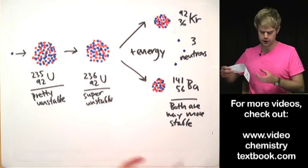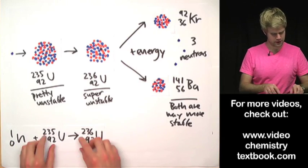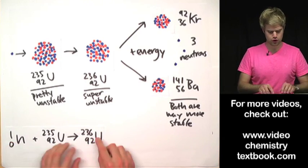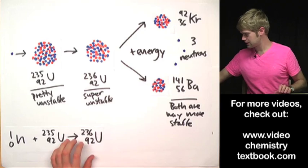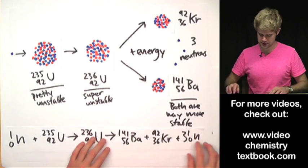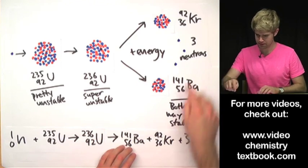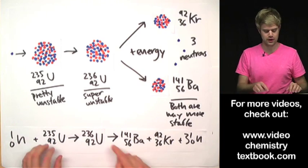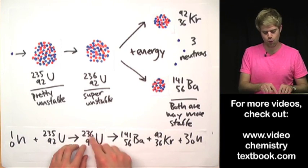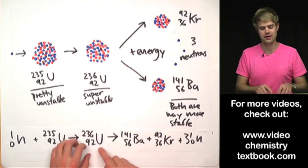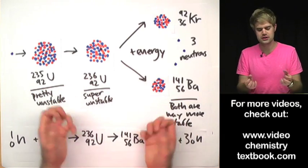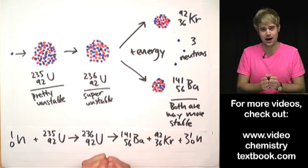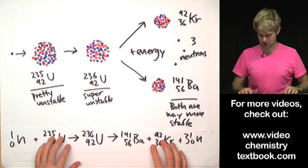Here's how we'd write this in a nuclear equation. We start with uranium-235, add a neutron to it and get uranium-236 and that then splits into barium, krypton and three neutrons. Sometimes when people are writing the equation for fission, they'll leave uranium-236 out because it doesn't stick around for a long time. It's so unstable it wants to split apart right away.